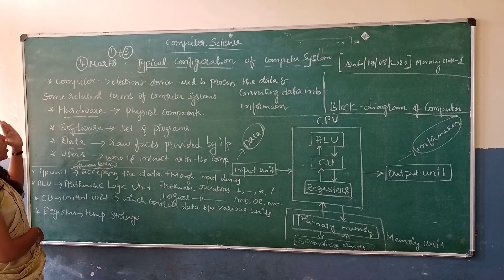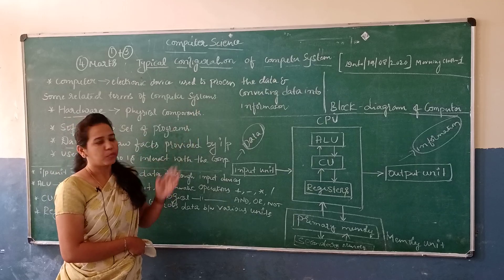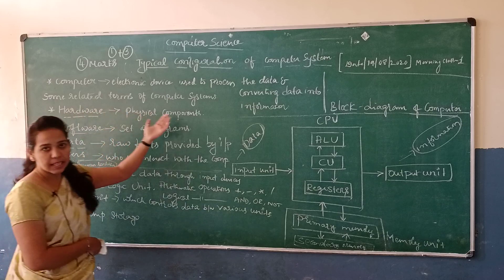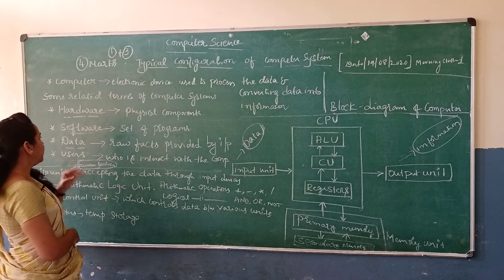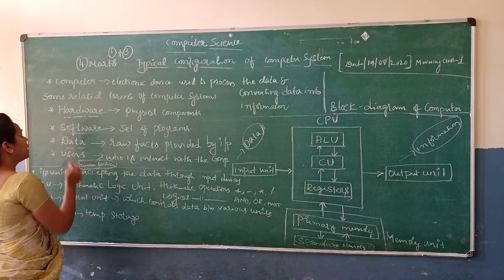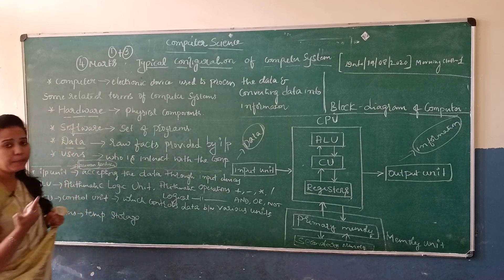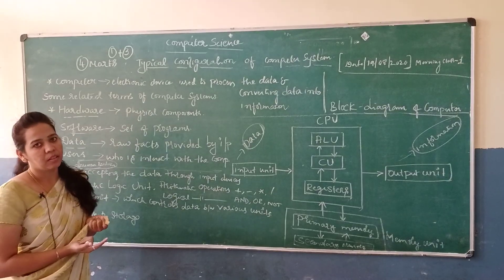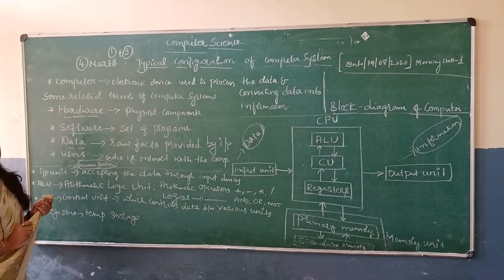Those are all the terminologies or terms which come under computer system. Hardware means physical components of the computer which we can touch and feel. Software means set of programs. Data means raw facts provided by the input. User means who interacts with the computer. Those are all the related terms of the computer system.